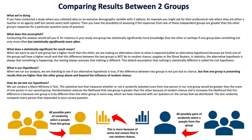So what does statistical significance mean? In the context of Likert questions, Likert scales are ordinal — they are not on an interval or ratio scale. Because they're ordinal, we have to think about this differently. When we want to see if one group has a higher result than the other, we're making an alternative claim — called an alternative hypothesis — because we think one group will have a higher result and that this difference is not due to random chance.